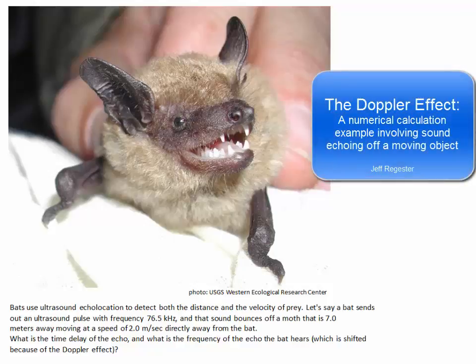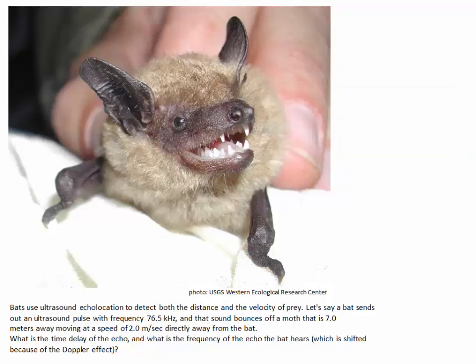Bats use ultrasound to detect both the distance and the velocity of prey. A bat sends out a pulse of ultrasound, and that takes time to travel out to, say, a moth, and reflect back for the bat to hear it again. From that time delay, the bat can know how far away that moth is.